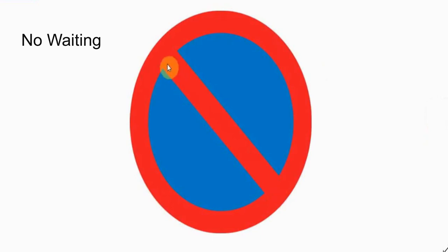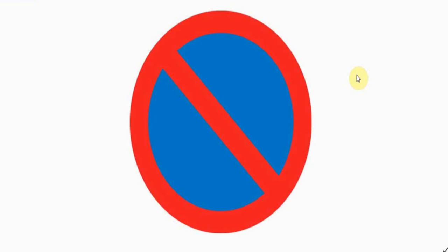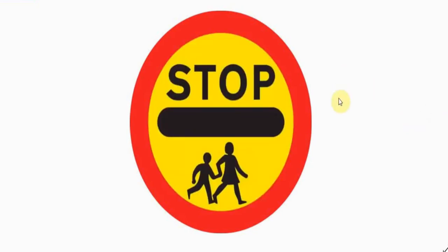This one is saying 'no waiting.' It's only one line - the other one had a line going across the middle. By 'no waiting,' it means you can pull up, let someone get out of the car or get in, but then you must drive off. You can't wait there for something to happen. So if you're a taxi driver or picking someone up from work or hospital, you see this sign - it's saying don't park here, but you can let people in and out.